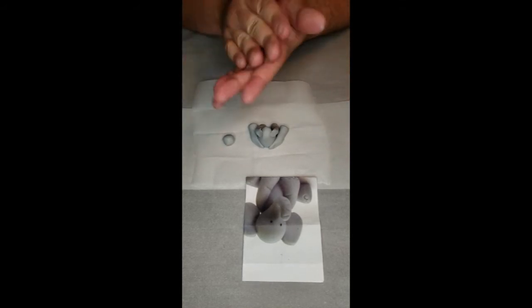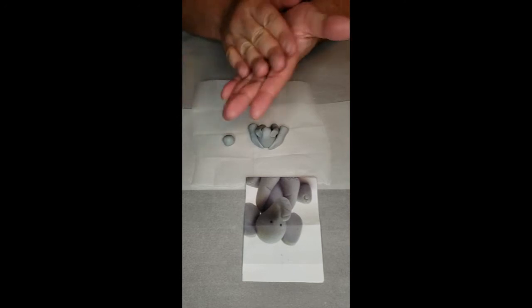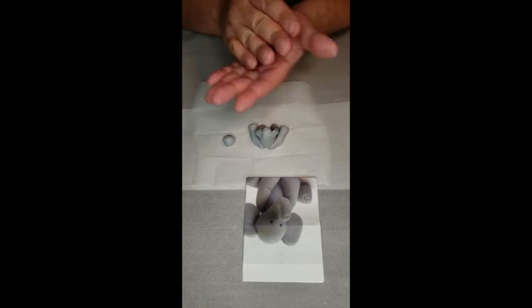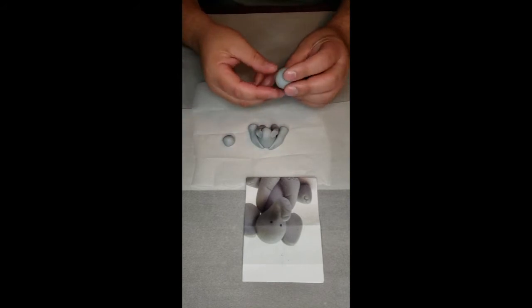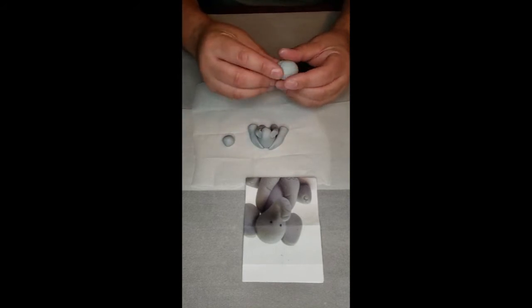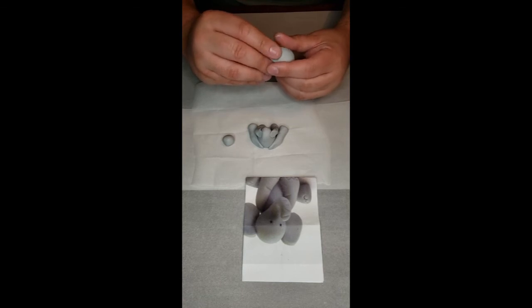I believe that should be big enough for both of the ears. Now we are going to make the head. Smooth it out. Make it into a ball. I am going to take one end of the ball. I am just going to stretch it out so I can make the trunk.